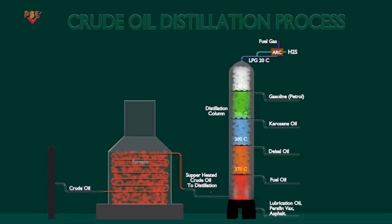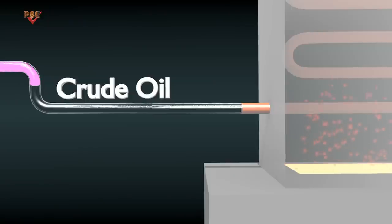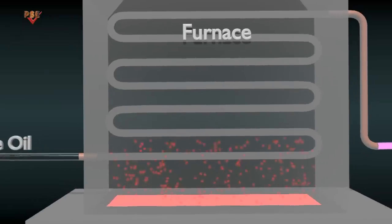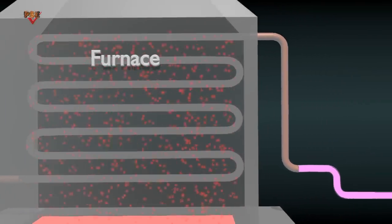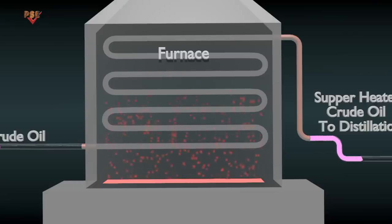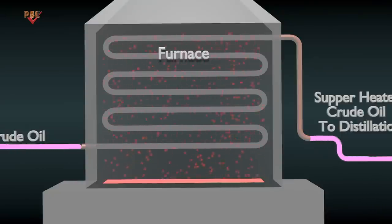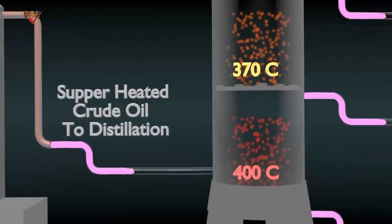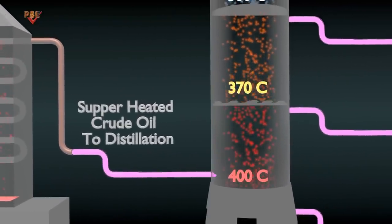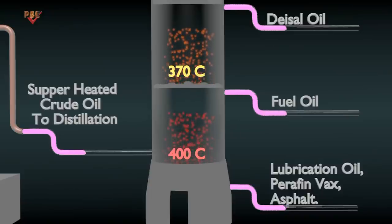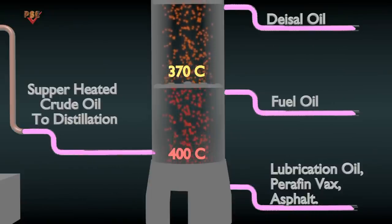To simplify the process, we consider one tower where the distillation process is taking place. Crude oil is supplied to a furnace before the distillation tower, where it is heated and vaporized to become the crude oil mixture. The vapor and liquid mixture is then fed into the bottom section of the tower. The feed section is the hottest point in the distillation tower and can reach as high as 400 degrees C.